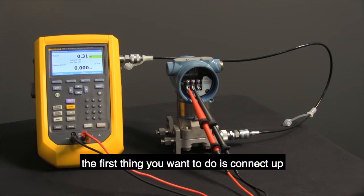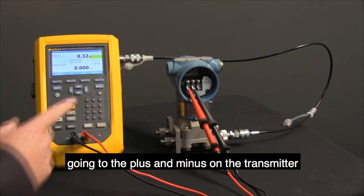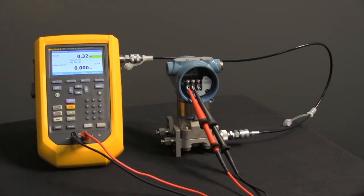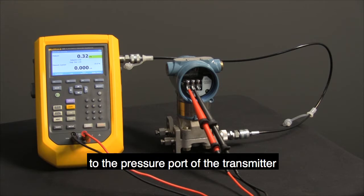The first thing you want to do is connect the calibrator to the transmitter using the 4 to 20 milliamp jacks, going to the plus and minus on the transmitter. Then connect your pressure hose from the 729 to the pressure port of the transmitter.